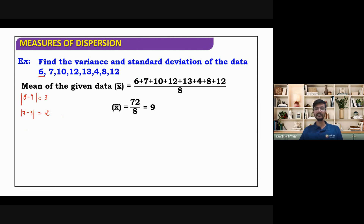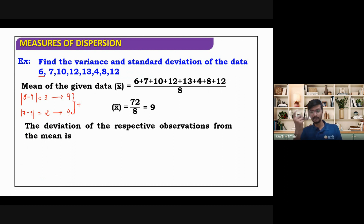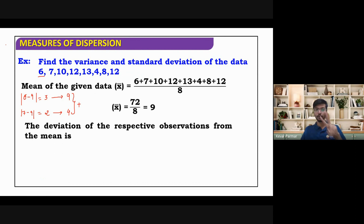For all of them, we will find the deviations, then square them and add them. Suppose I got minus three — I square it, I get nine. Then I got minus two — I square it, I get four. After getting all of them, we have to add them. Find the deviations, square them, and add them for all observations and give me the final value.